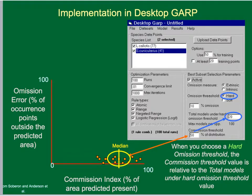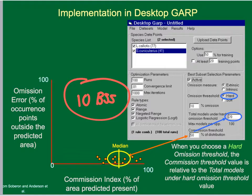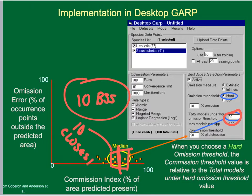To summarize what we've selected: a 10% hard omission threshold, 20 models selected under that rule, and then 50% of those models to arrive at 10 models in our best subset. To explain how that final selection works, the median commission value of those 20 models is calculated, and the 10 models closest to that median value are selected for the best subset.